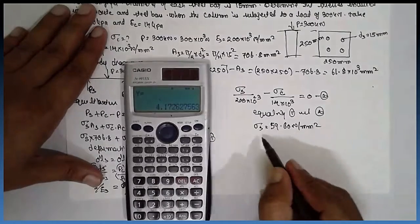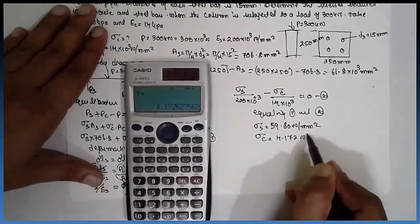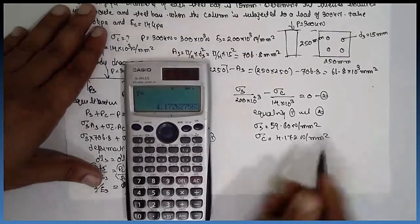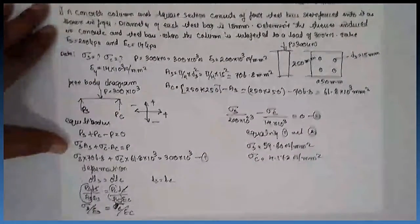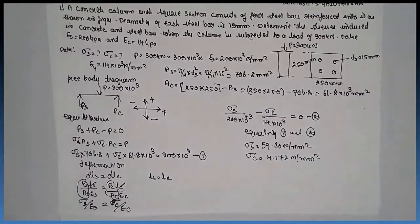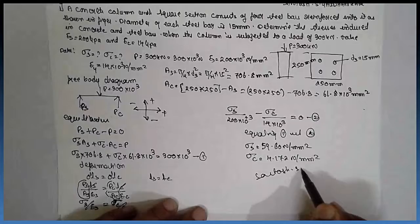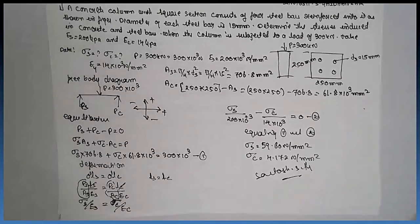One more answer is Sigma C: 4.172 Newton per mm square. In this way, you have to solve the problem. I am Satosh Garamkar, thank you very much.